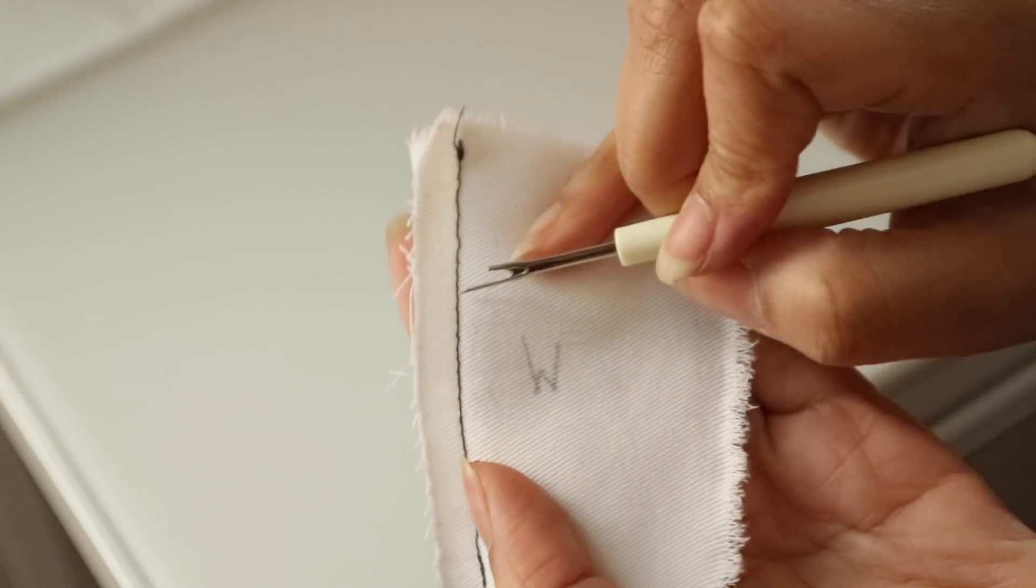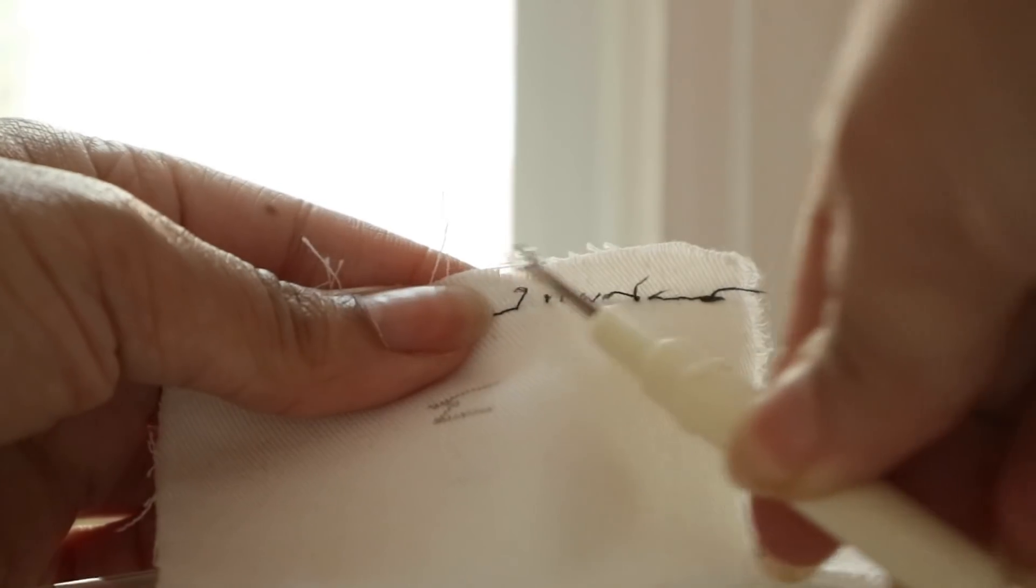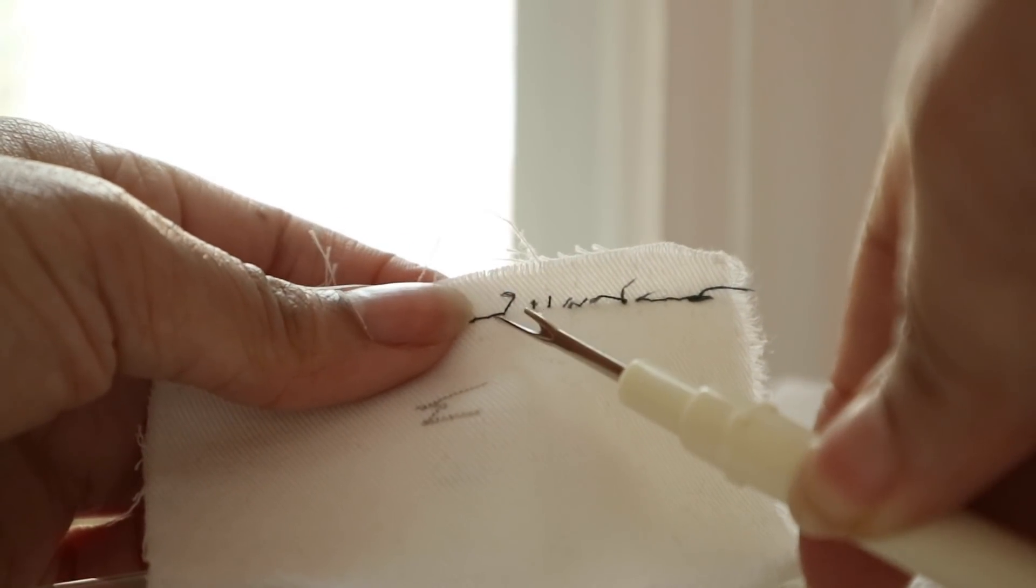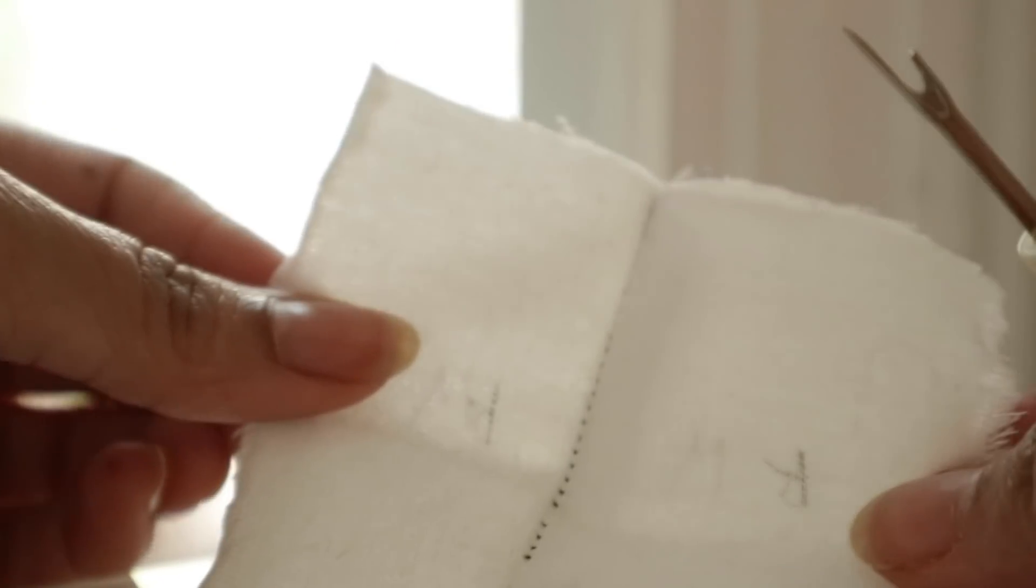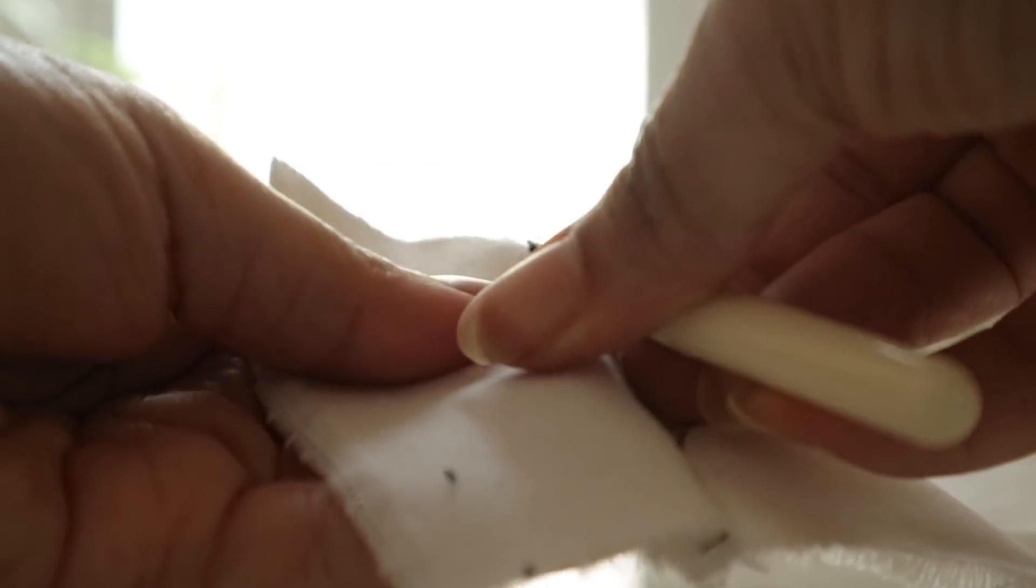And what most people try to do is rip out each stitch individually. And while this is effective, it's also time-consuming. So what I do is I flip my work over to the right side, put some tension, and just go up the middle.